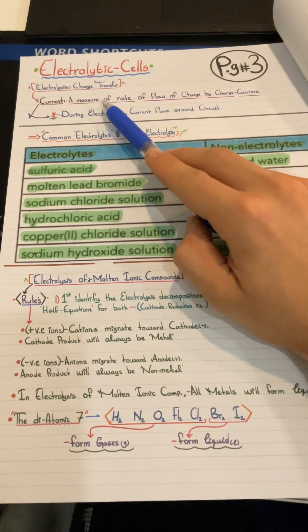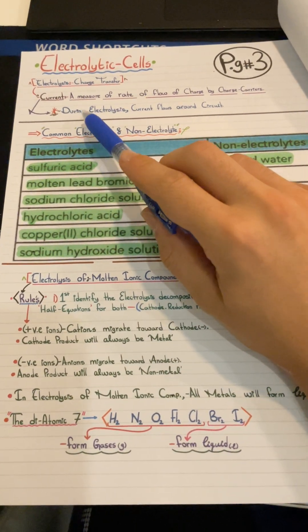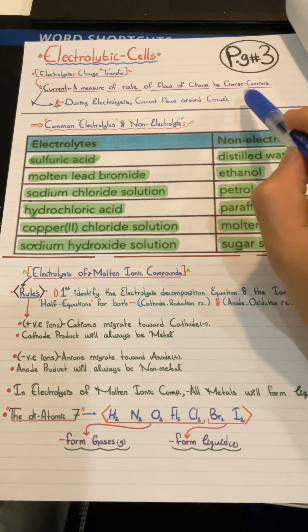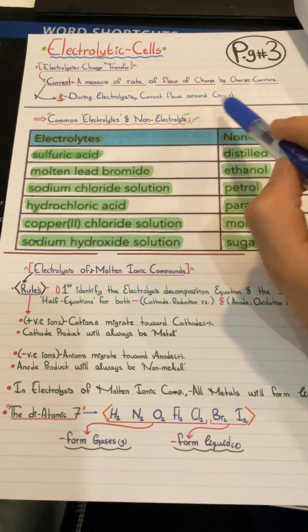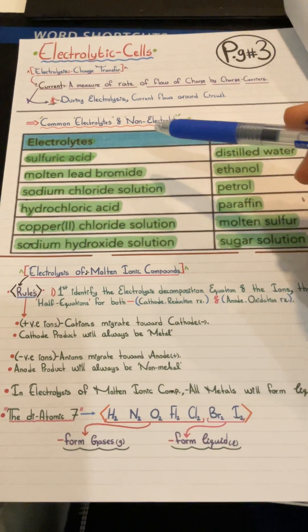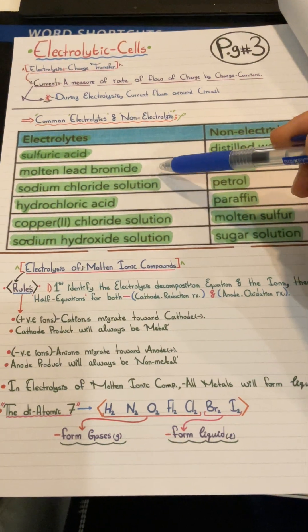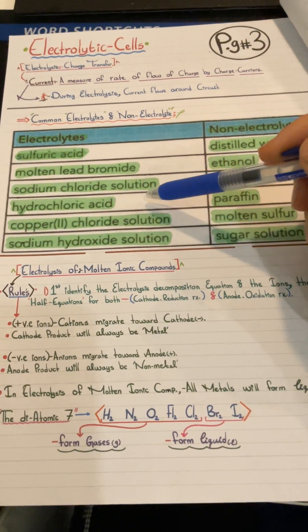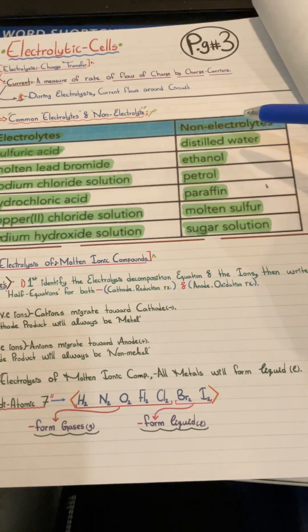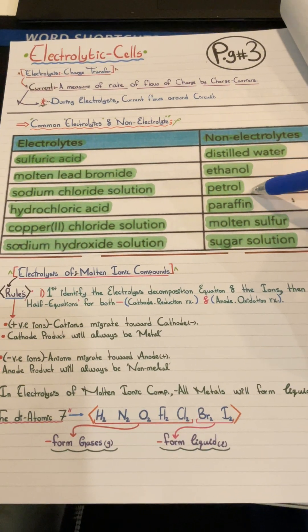Charge is transferred through a current, which is a measure of the rate of flow of charge by charge carriers. Common electrolytes include sulfuric acid, molten lead bromide, sodium chloride, hydrochloric acid, copper chloride, and sodium hydroxide. Common non-electrolytes are distilled water, ethanol, petrol, paraffin, molten sulfur, and sugar solution.